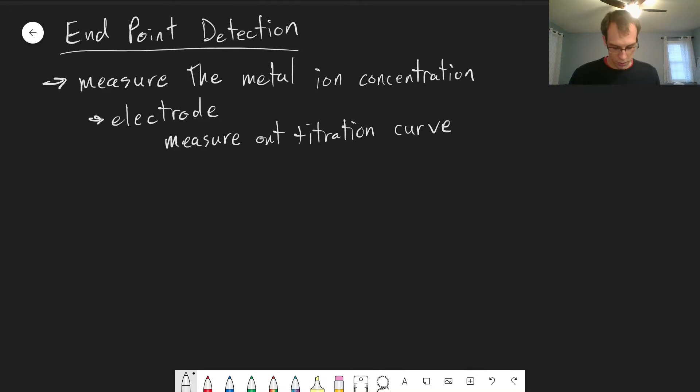Of course, if you have an electrode, you can often measure things with the electrode directly. So this is not the most common way. There are two other main ways that the endpoint is determined in a precipitation titration.